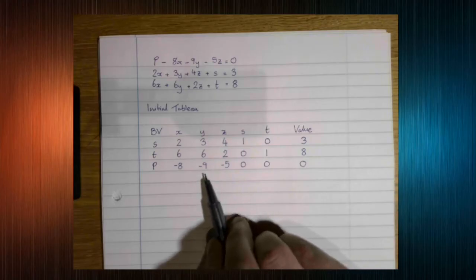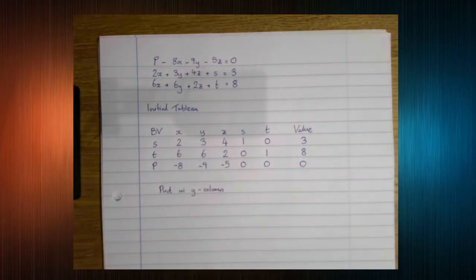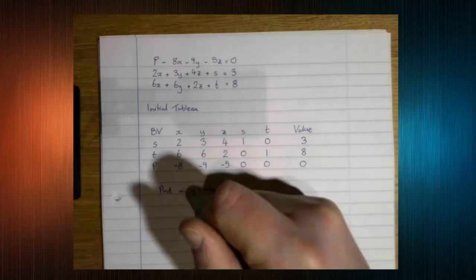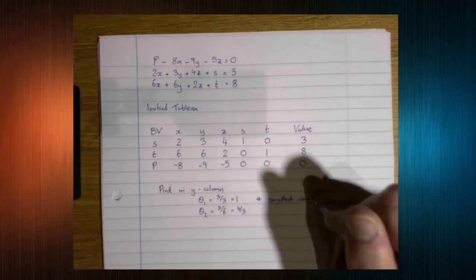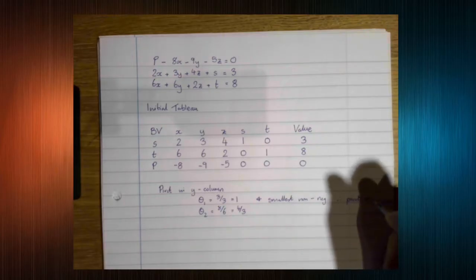First thing we need to do is work out the pivot. We use the column with the most negative number, which is minus 9, so the pivot is in the y column. Now we calculate theta values: theta 1 for row 1 is 3 over 3 which is 1, and theta 2 is 8 over 6 which is more than 1. The smallest non-negative value is theta 1, so the pivot is in row 1.